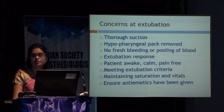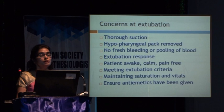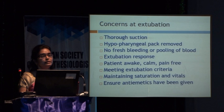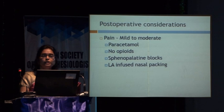Other methods of controlling bleeding: corticosteroids, tranexamic acid at 10 mg per kg IV — with some reports of local application also being helpful — hot saline local application, and for longer duration nasal endoscopy, ensure temperature is maintained. At extubation: thorough suction, remove throat pack, ensure no fresh bleeding, control extubation response with non-anesthetic measures, ensure patient is completely awake, calm and pain-free, meeting extubation criteria with maintained saturation and vitals, and ensure antiemetics have been given. Post-operative pain is usually mild to moderate and easily controlled — opiates are not required; sphenopalatine blocks or local anesthesia-infused nasal packing can be done.